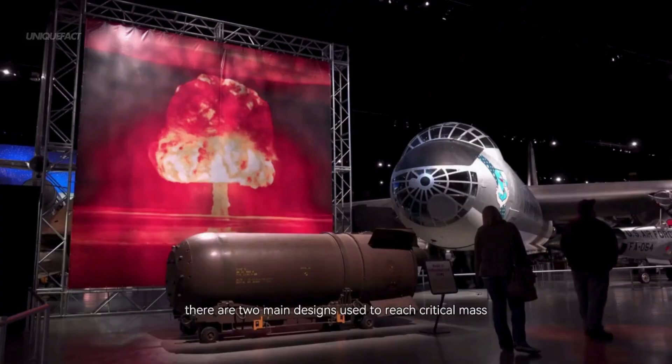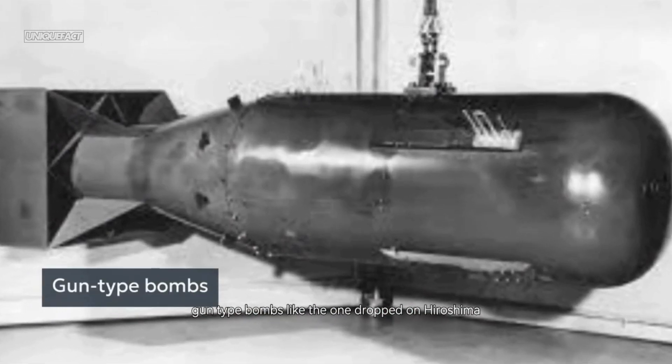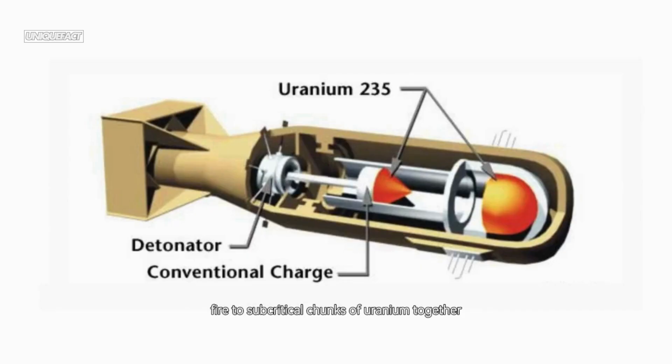There are two main designs used to reach critical mass. Gun-type bombs, like the one dropped on Hiroshima, fire two sub-critical chunks of uranium together using conventional explosives, like loading and firing a bullet inside the bomb itself.